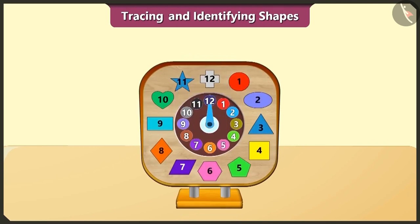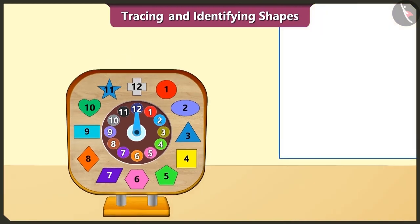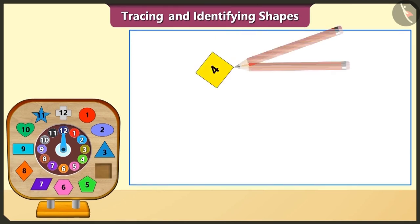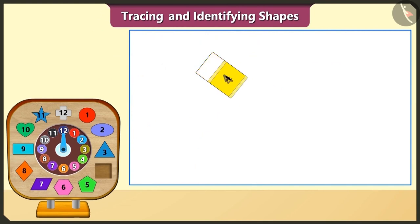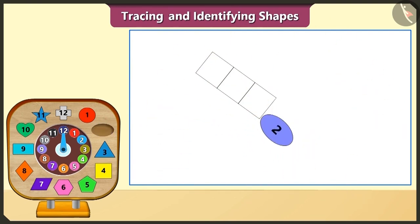Friends, now let's trace some of these shapes and draw a picture. First of all, we will trace the square shaped block and draw one, two, three squares. Let's now trace the ellipse — one and one, two ellipses.